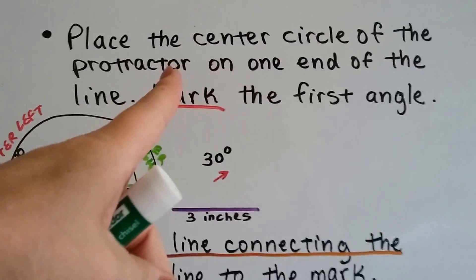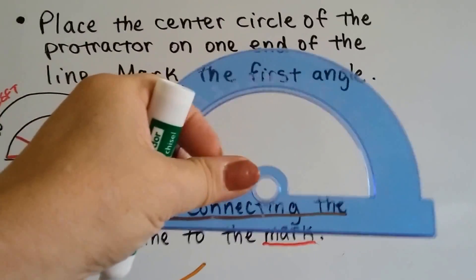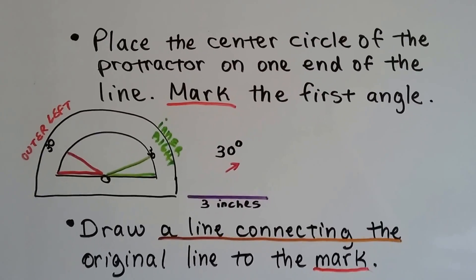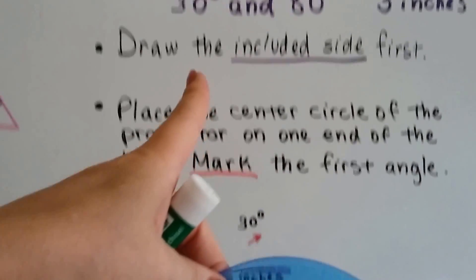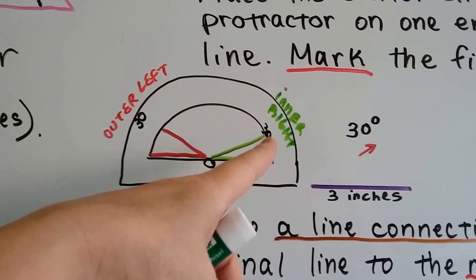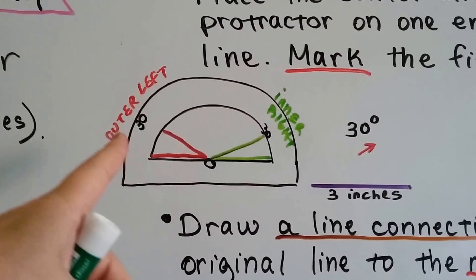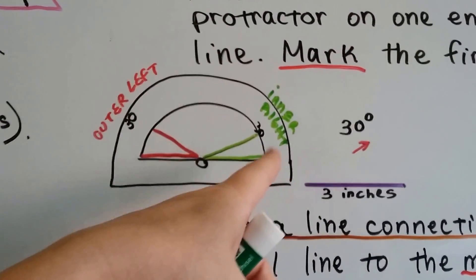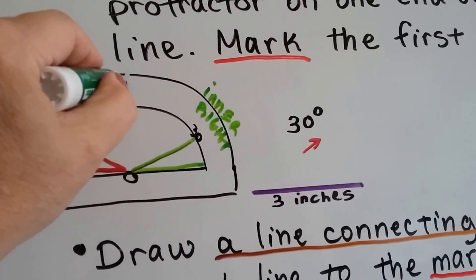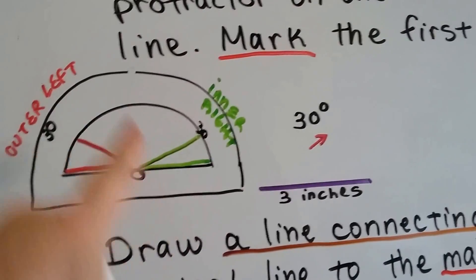Then we place the center circle. See the center circle right here? We put that on one end of the line and mark our 30 degree angle. So, on a protractor, you're going to notice that there's numbers on the inside of this edge and on the outside of the edge. And they're going in opposite directions. And they meet at 90 right here. The 90 is right in the middle.